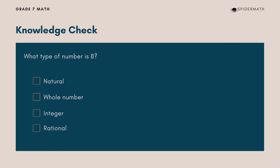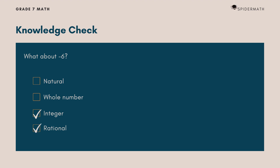Now let us check your knowledge. What type of number is 8? It is natural, and therefore it is also a whole number, an integer, and rational. What about negative 6? It is integer and rational. What about 0? It is a whole number, so it is also an integer and rational. What about 2.3? It's rational.